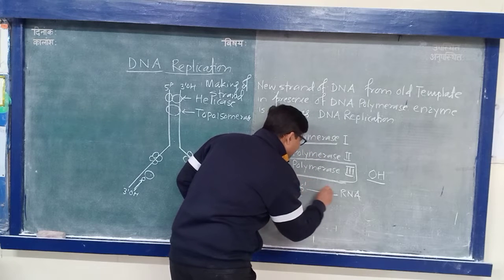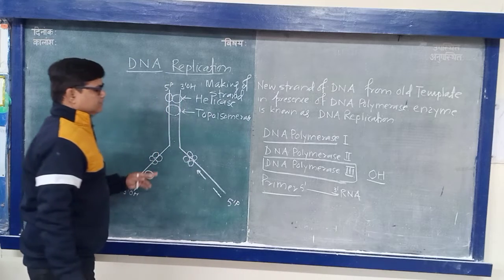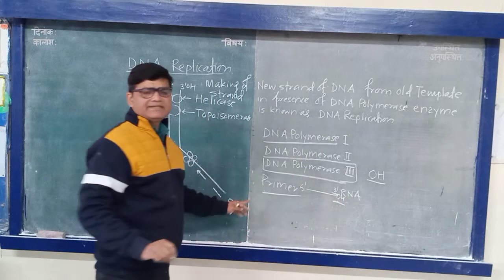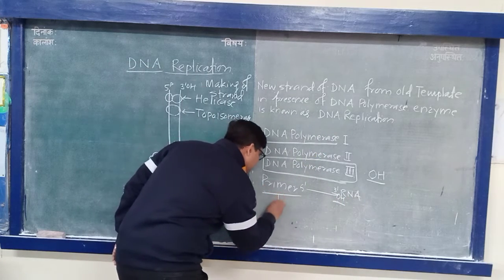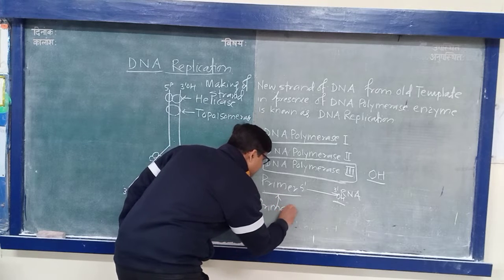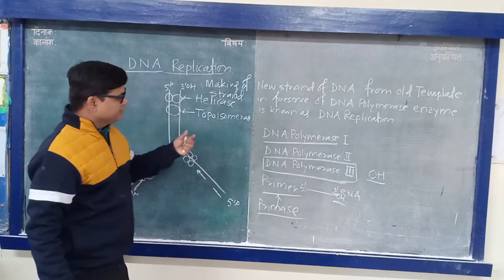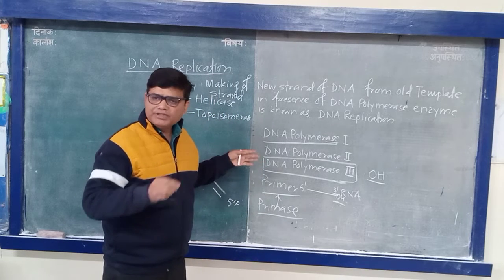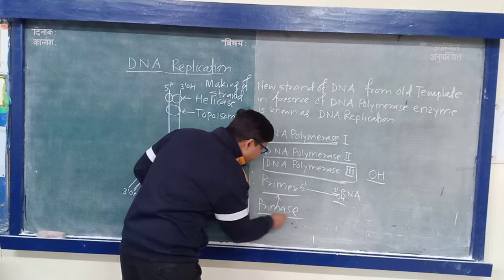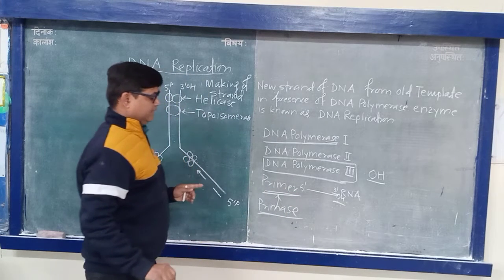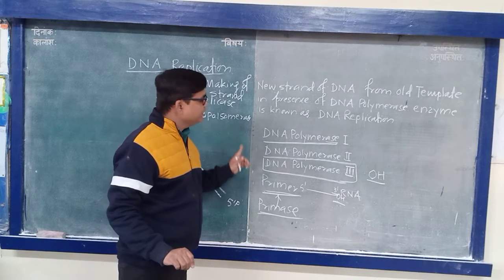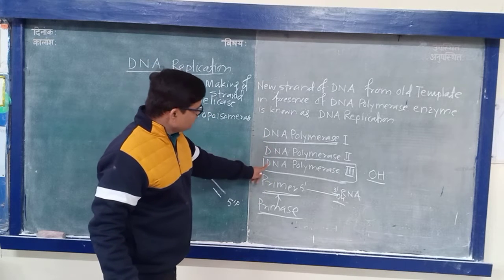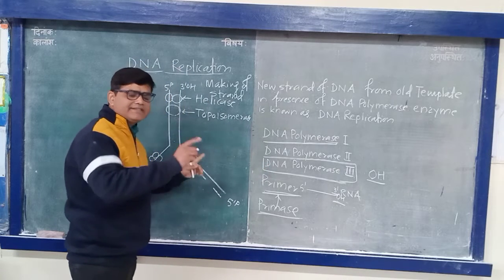The primer will provide the 3' OH hydroxy group, and this primer is synthesized by the enzyme Primase. All enzymes are mostly protein. So this Primase will form the Primer. If there is no formation of Primer, no DNA synthesis will occur, even in the presence of DNA Polymerase 1 and DNA Polymerase 3.